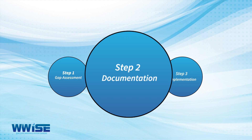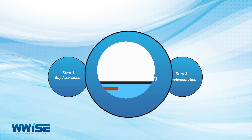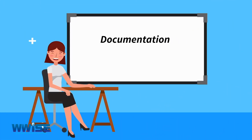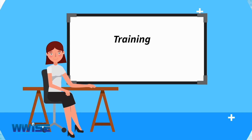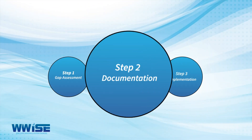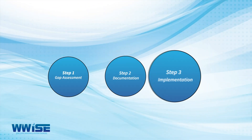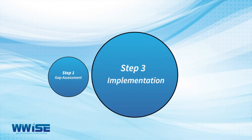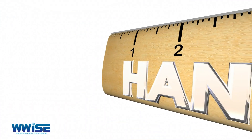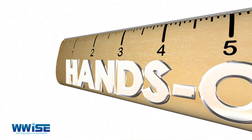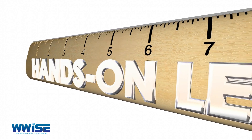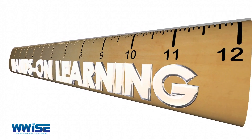Step 2: Documentation. We develop your ISO system and documentation and conduct awareness training for all staff. Step 3: Implementation. We help you to generate records and conduct various training interventions to ensure an adequate level of skills transfer.